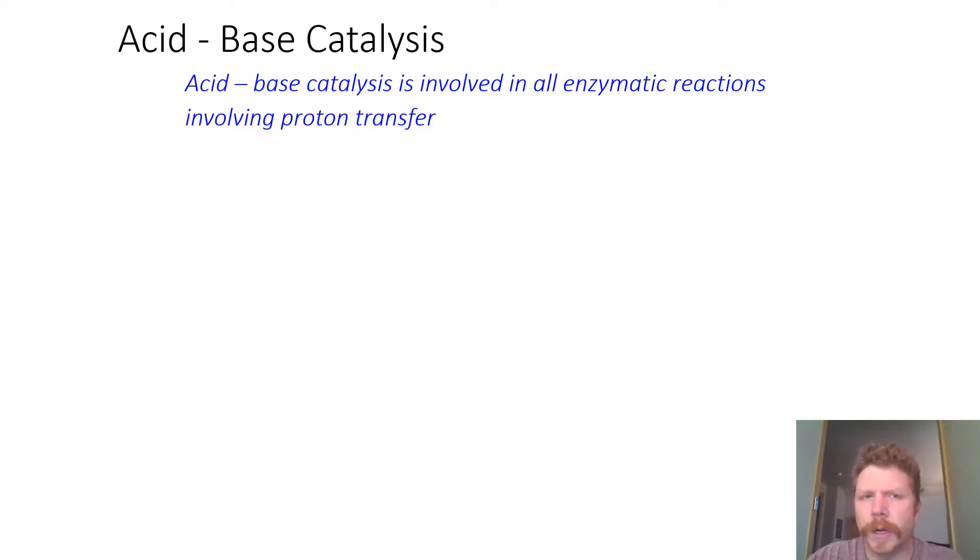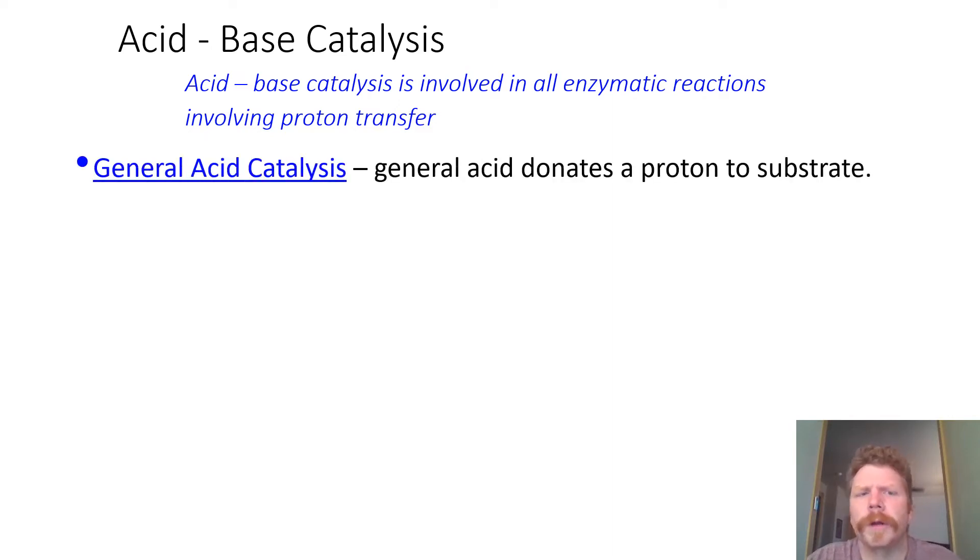And so when we start talking about acid-base catalysis, basically our definition is acid-base catalysis is involved in all enzymatic reactions involving proton transfer. Pretty straightforward there. General acid catalysis. A general acid donates a proton to a substrate. An enzyme active site residue must be protonated. So it has to have that proton in order to give it up. And so when you see this sort of definition what I want you to be doing is I want you to be thinking about, okay, what residues are good candidates to be involved in general acid catalysis?